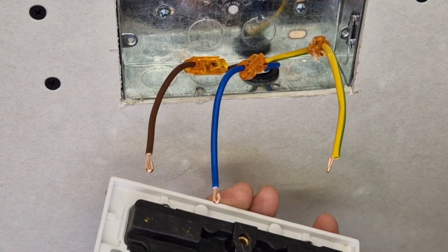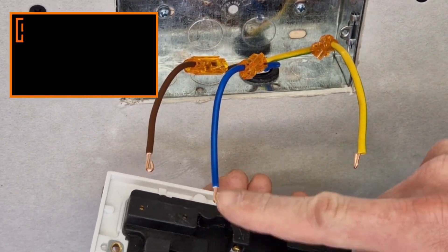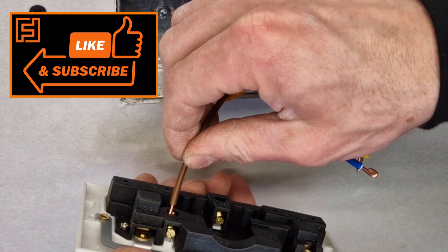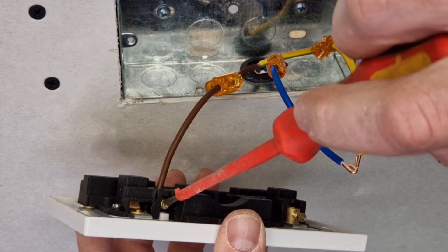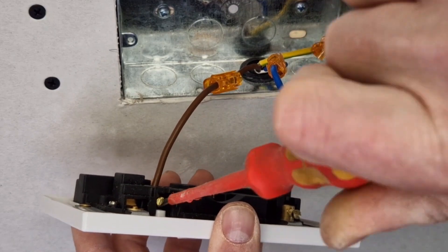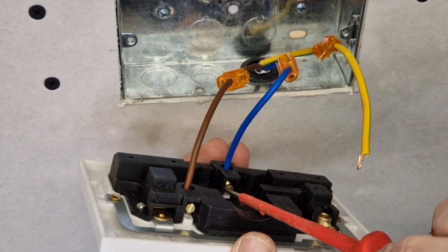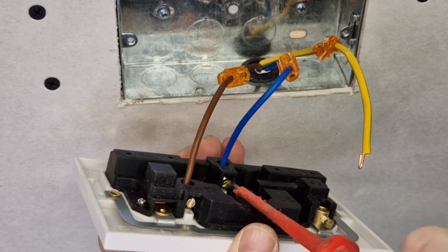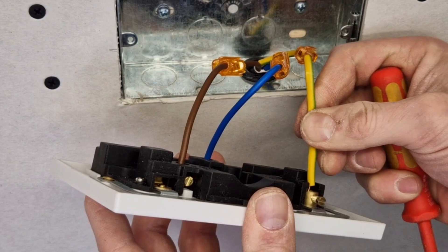So the final job is just to connect this socket up. As you can see the cables are doubled over, so obviously the brown goes into the live, the neutral is the blue, and the earth goes into the earth terminal.